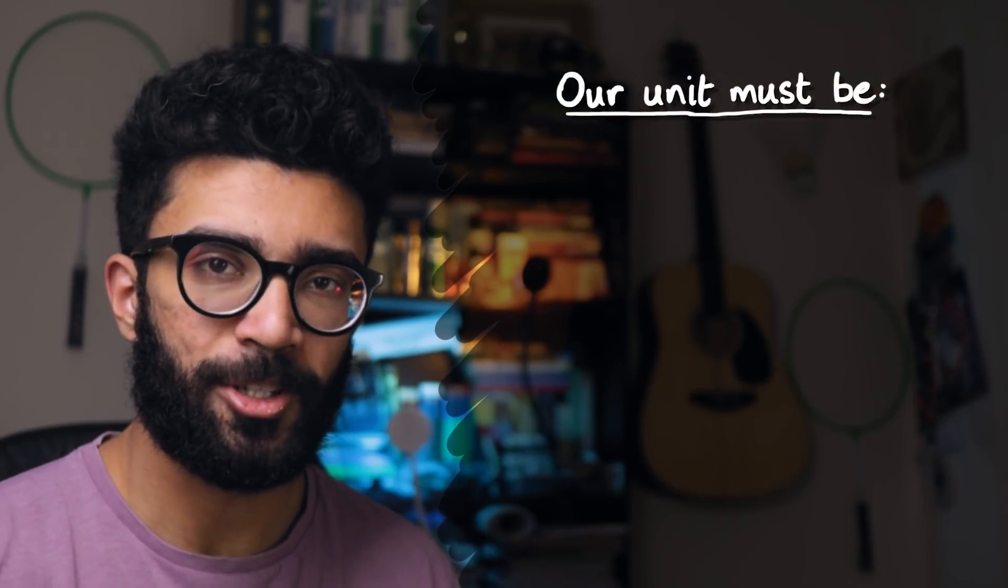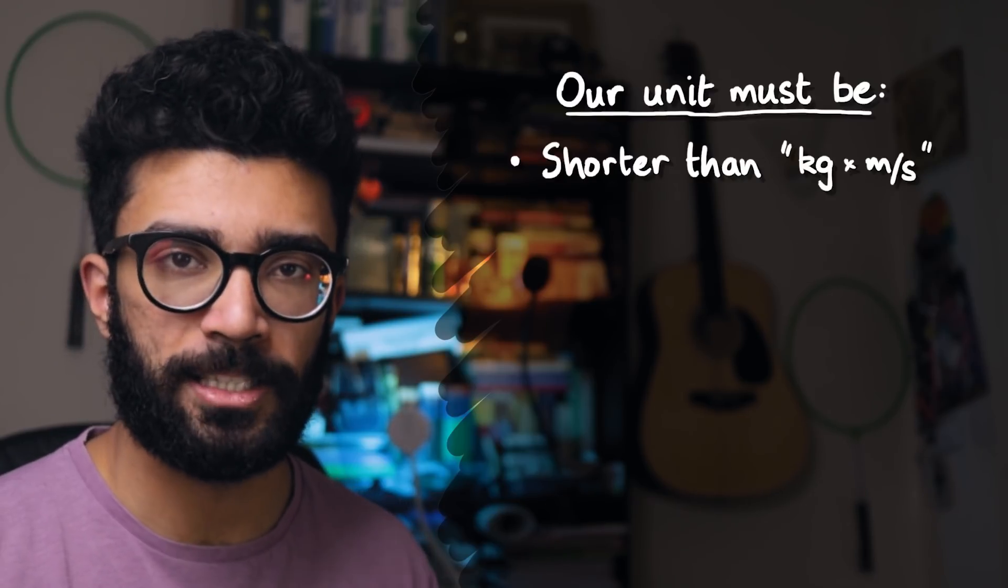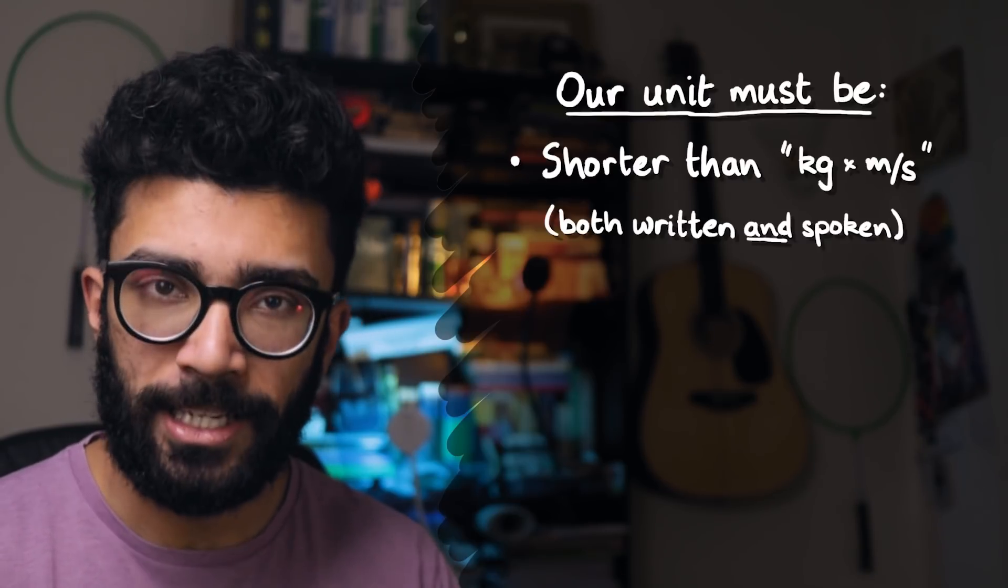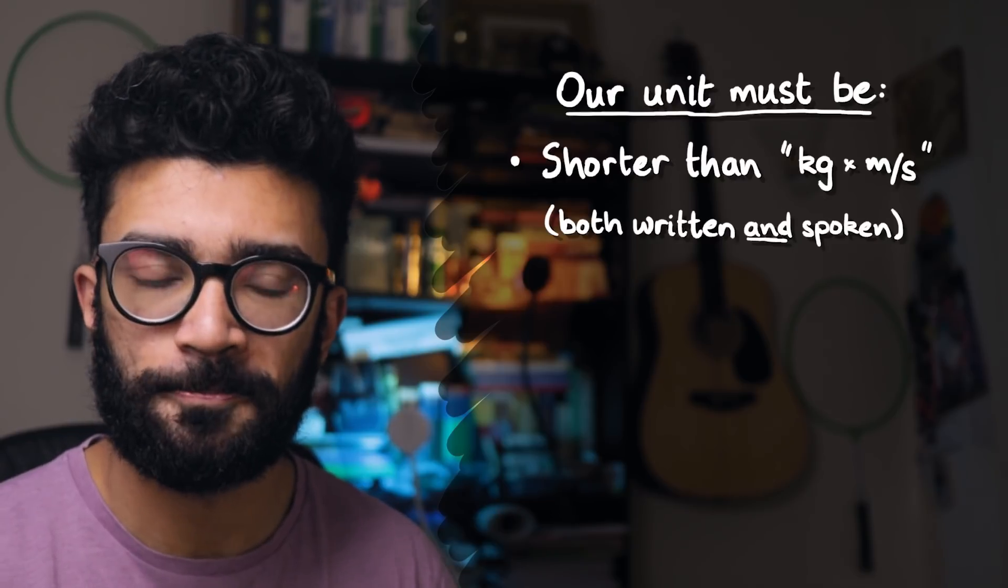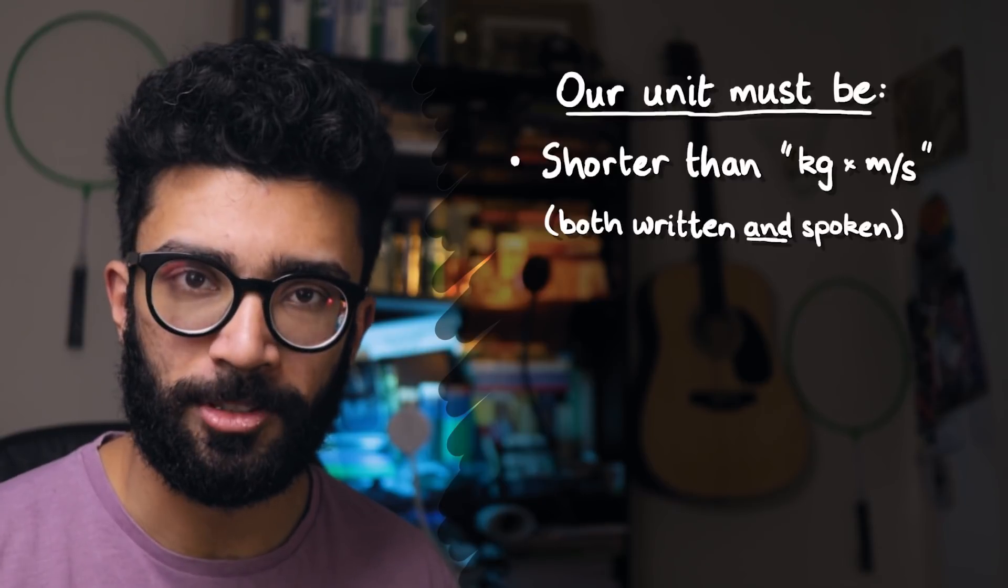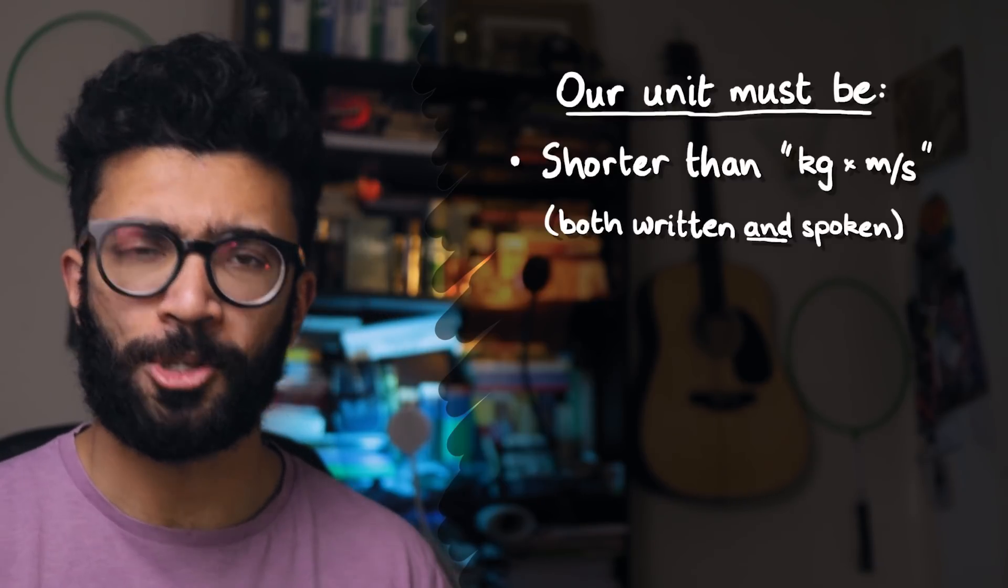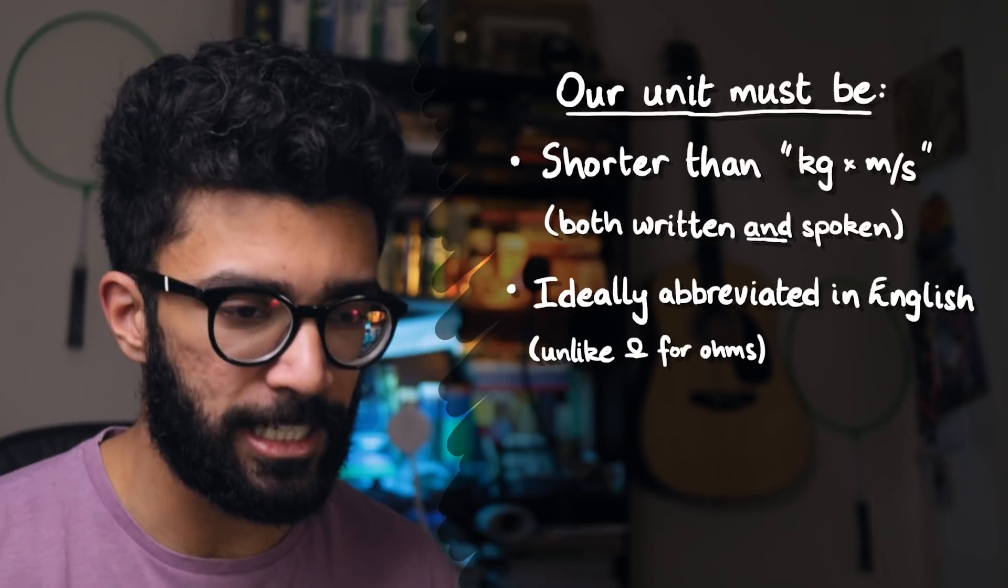There isn't a commonly used unit for momentum in the SI system, so let's make one. Remember, we want to create a unit that saves us from having to write kilograms times meters per second every single time. We want something that's short and convenient, and ideally also allows us to speak the unit of momentum faster than saying kilograms meters per second. Depending on how you say it, kilograms meters per second has at least eight syllables, and even more if you say kilograms times meters per second. We want something a little bit more snappy.